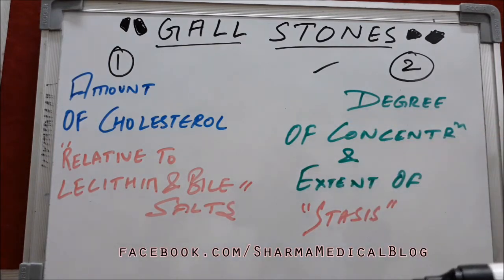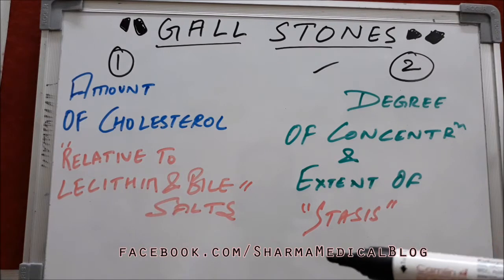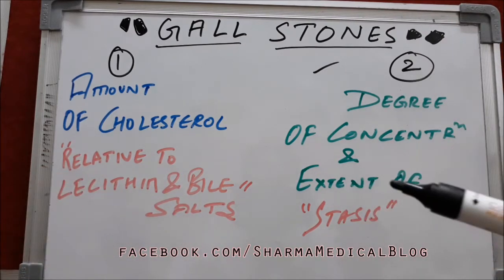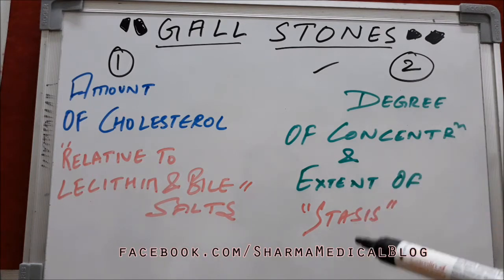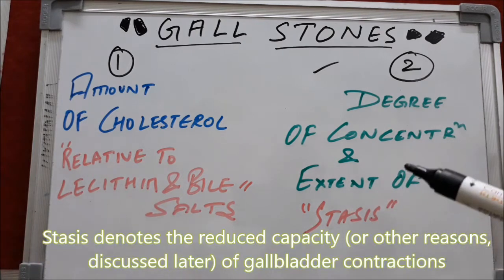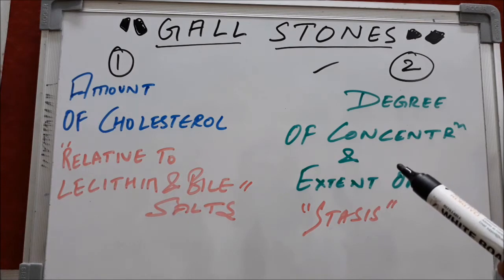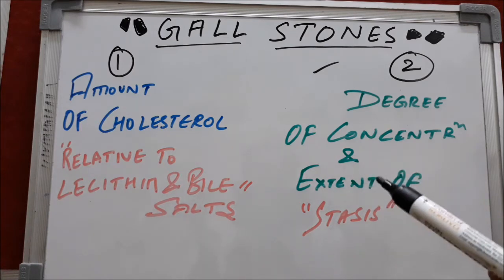Their concentration, which affects their equilibrium state, matters in the formation of gallstones. Second is the degree of concentration and the extent of stasis. This means that the concentration of cholesterol in the bile and the amount of time it stays in the gallbladder affects the formation of gallstones.